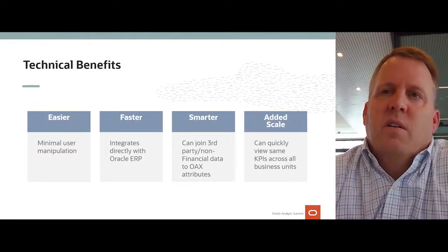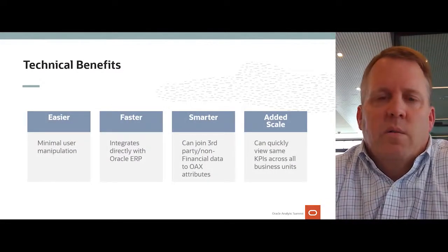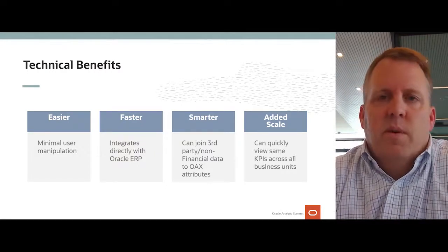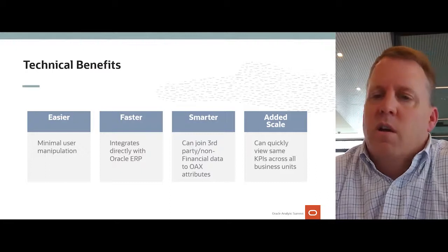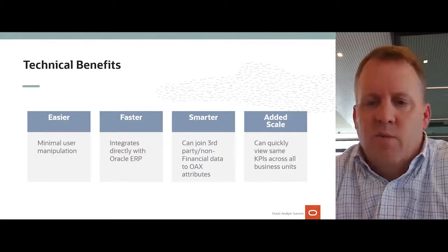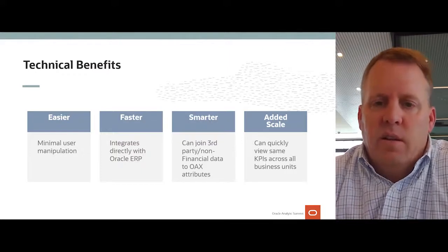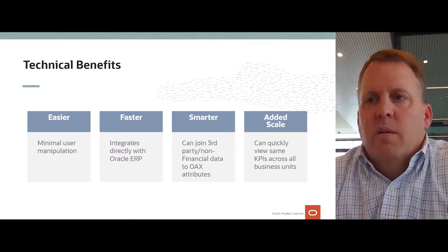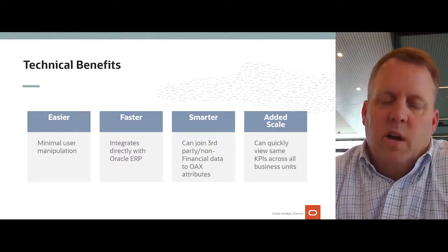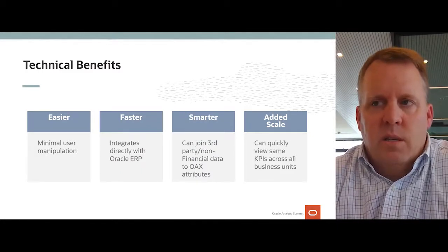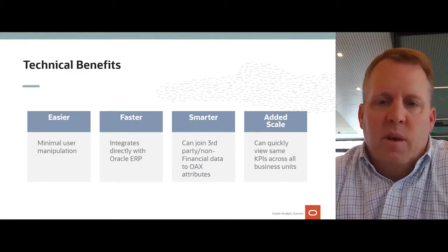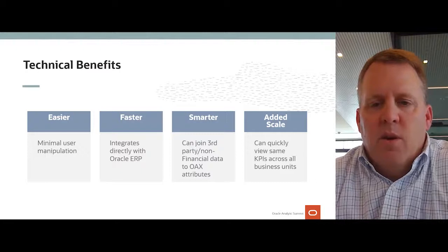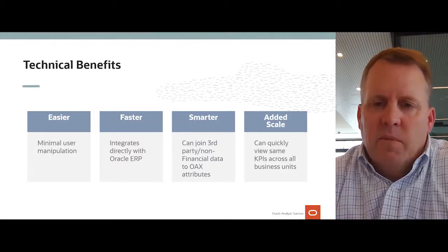What are the technical benefits Greystar has seen? I broke these into four categories: easier, faster, smarter, and added scale. From the easier perspective, it's minimal user manipulation — once you create a card, it's there, and you only need to add when we add a new region or company. It's faster, integrating directly with our ERP — overnight, but we can also run it on demand. Smarter — we can join outside third-party information as well as non-financial information for attributes. From added scale, we can quickly implement and add new cards to a new region as needed.